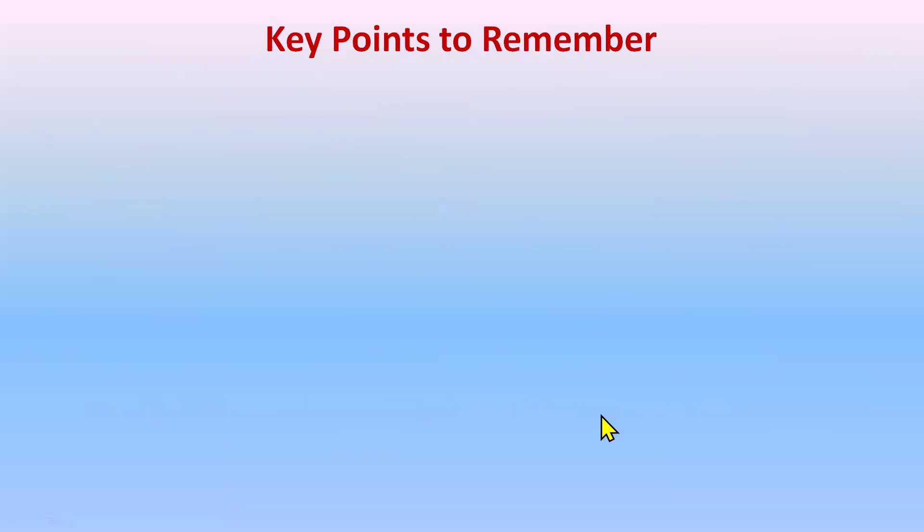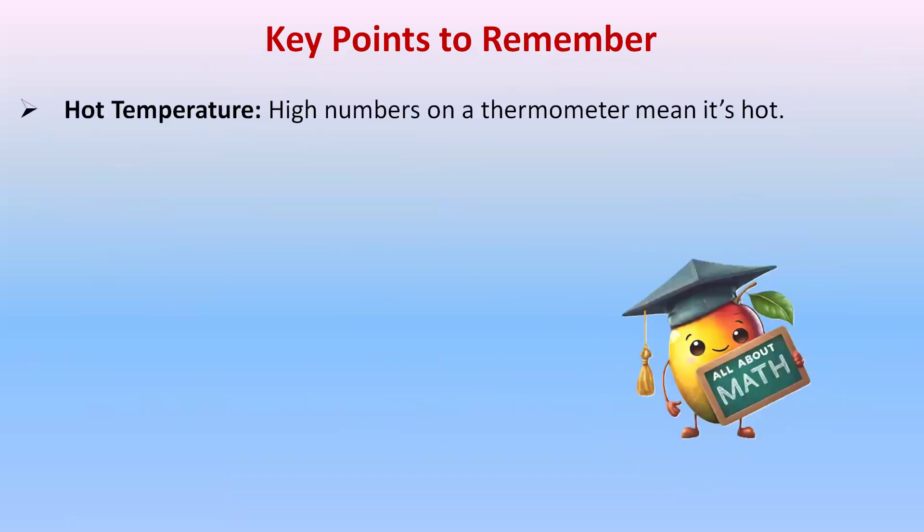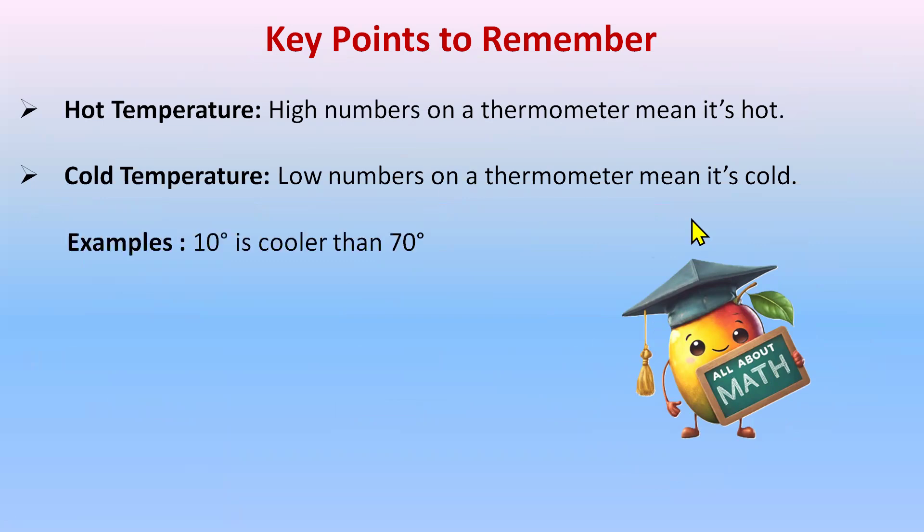Key points to remember: hot temperature - high numbers on the thermometer means it's hot. Cold temperature - low numbers on the thermometer means it's cold. For example, 10 degrees is colder than 70 degrees.